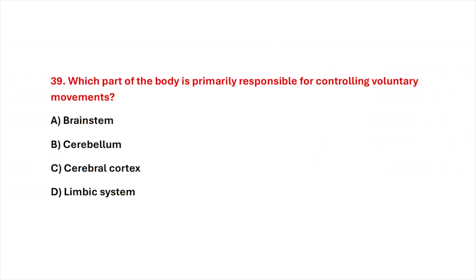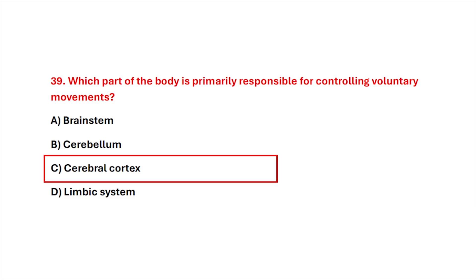Question 39. Which part of the body is primarily responsible for controlling voluntary movements? Correct answer is option C, cerebral cortex.